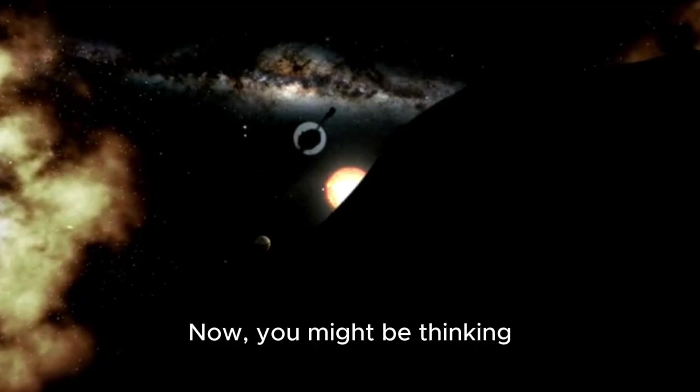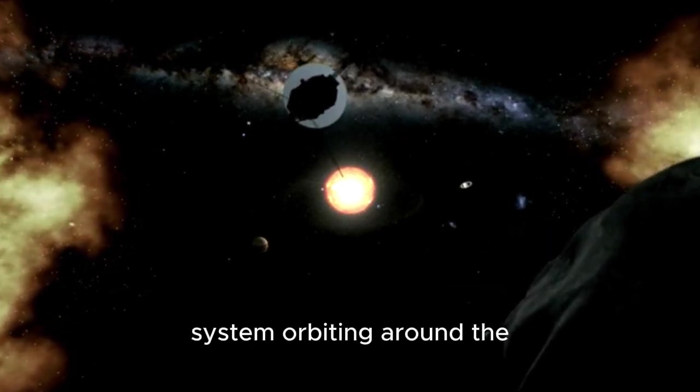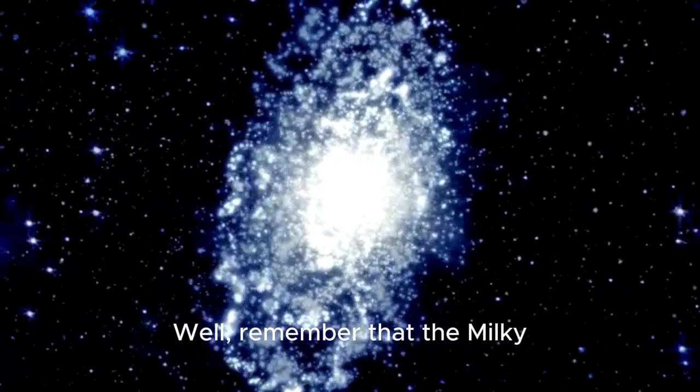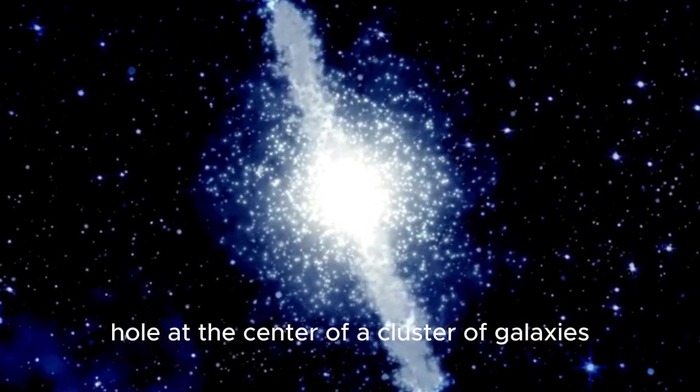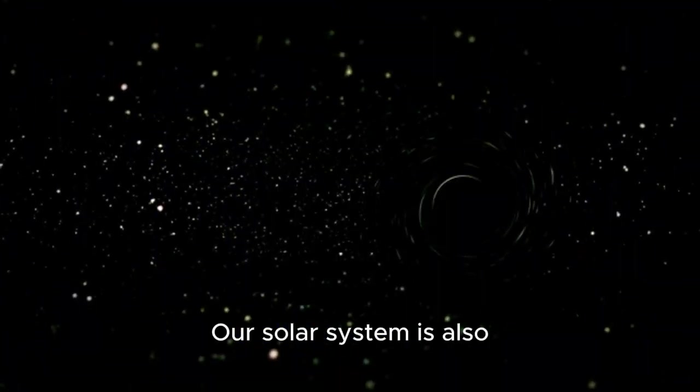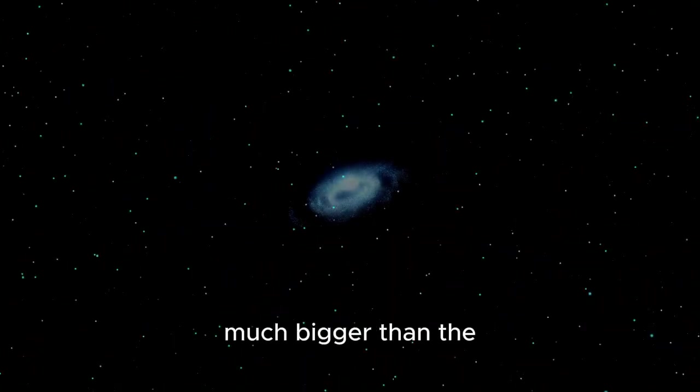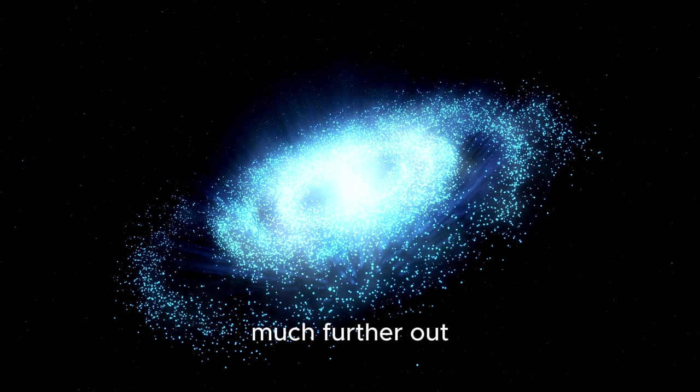You might be thinking, we're just a tiny little solar system orbiting around the Milky Way's black hole. How could we possibly mess it up? Well, remember that the Milky Way is also orbiting around a black hole at the center of the Virgo supercluster. And our solar system is also orbiting around that black hole. And because that black hole is so much bigger than the one at the center of the Milky Way, its gravity extends much, much further out.